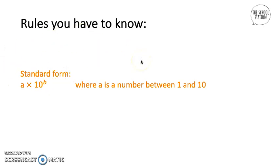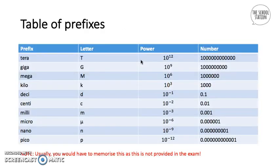Something else you also have to memorize for your GCSE exam is the table of prefixes. These are all the prefixes you need to know for the exam. You might have heard some of these before — for example, in computers we use gigabytes, terabytes, or megabytes — and they can sometimes be represented using shorter letter symbols.